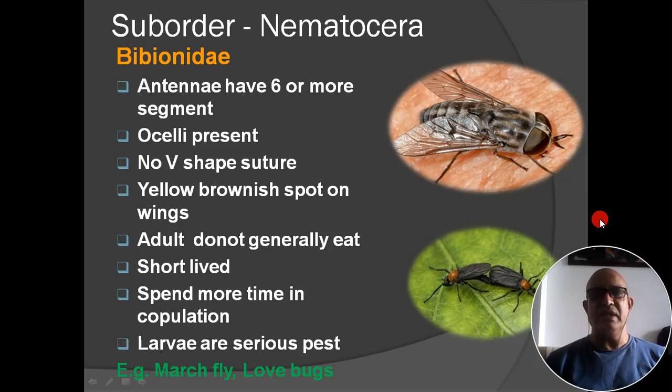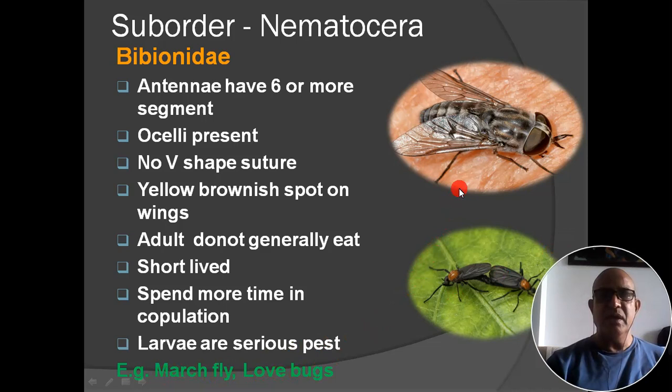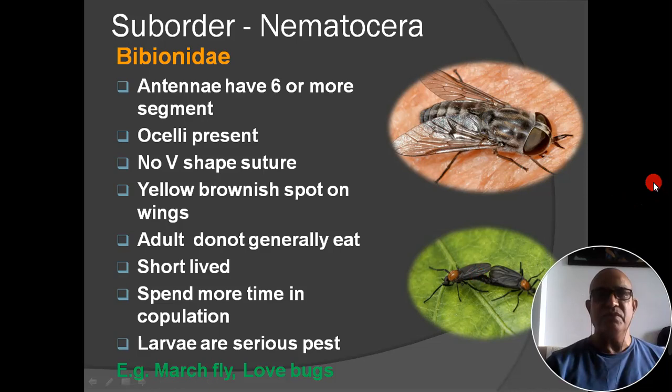Next family: Bibionidae. Antenna has 6 or more segments; ocelli present; no V-shaped suture; yellow-brownish spots on wings. Adults generally do not eat; short life cycle; spend more time in copulation; larvae are serious pests. Main examples: march fly and love bug. The name 'love bug' is given because this insect spends most of its time in copulation, hence commonly known as love bug.